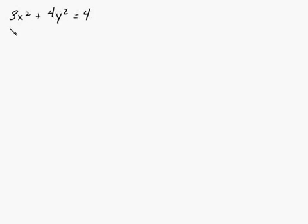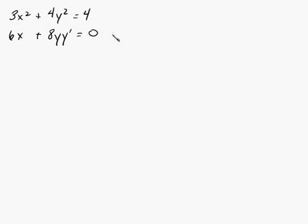So the first derivative: since y represents some unknown function, we have to multiply it times the derivative, and that's equal to 0. At this point you could go ahead and isolate the first derivative, but we're going to keep going.